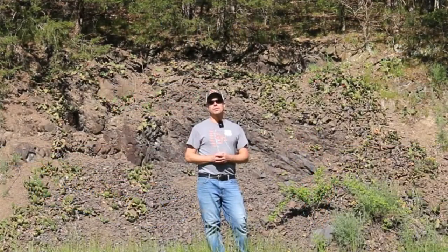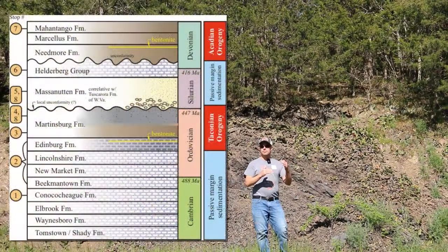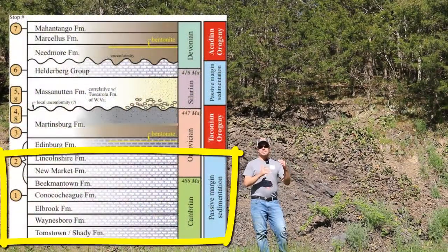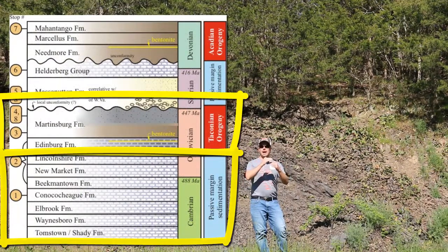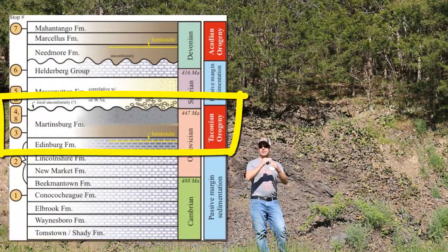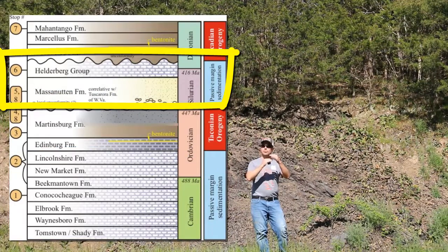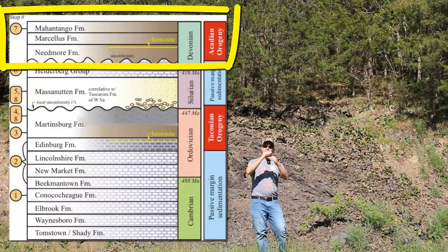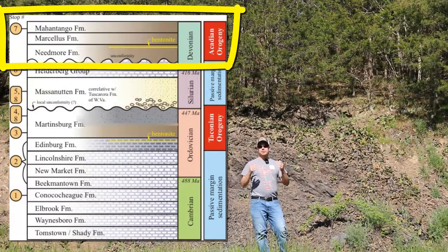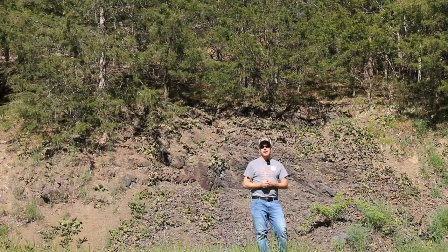To recap the trip so far: we have an initial carbonate package representing passive margin conditions, overlaid by siliciclastic sediment produced by the Taconian orogeny, overlaid by carbonates like the Helderberg Group representing a return to passive margin conditions, and then overlaid by this material — a return to siliciclastic production, in other words a return to mountain building.